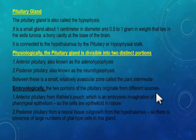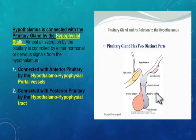Embryologically the two portions originate from different sources. The anterior pituitary originates from Rathke's pouch, an embryonic invagination of the pharyngeal epithelium, so the cells of the anterior pituitary are epitheloid in nature. The posterior pituitary embryologically develops from the neural tissue outgrowth from the hypothalamus, so it is connected by the nervous tract with the hypothalamus and contains a large number of glial-type cells.